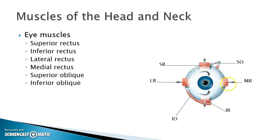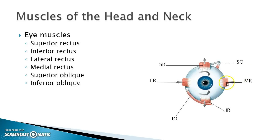On the top of the eye, the superior rectus goes straight back. The muscle under the eye going straight back is the inferior rectus. On the medial side going straight back is the medial rectus, and on the lateral side going straight back is the lateral rectus.